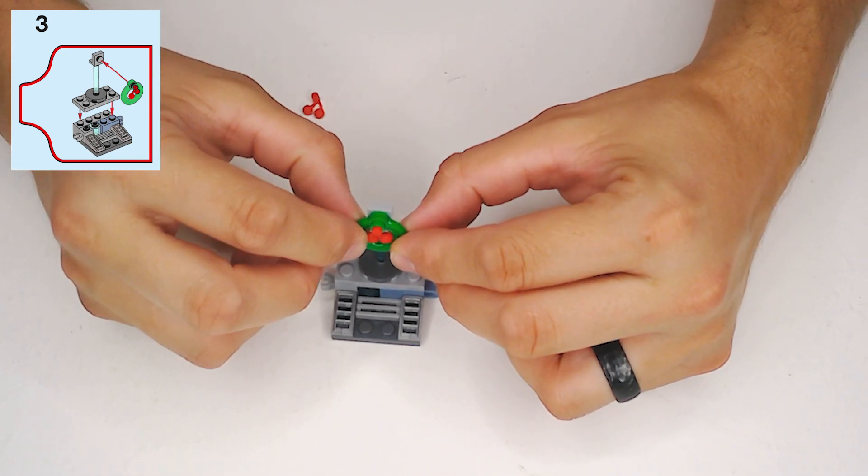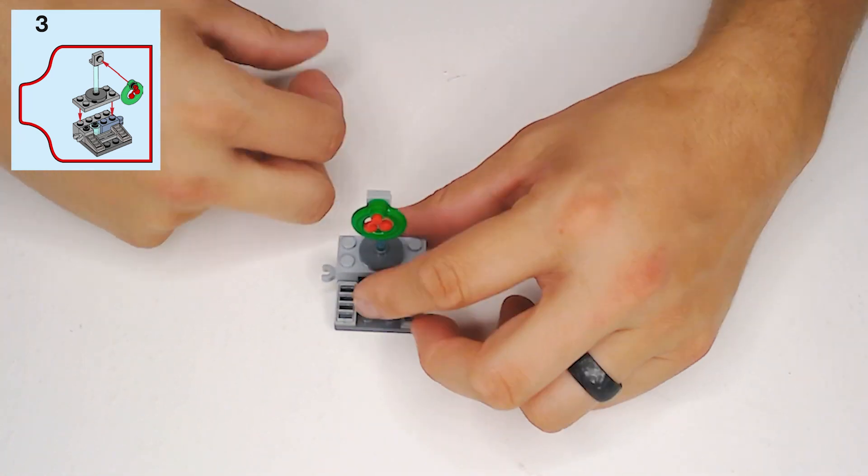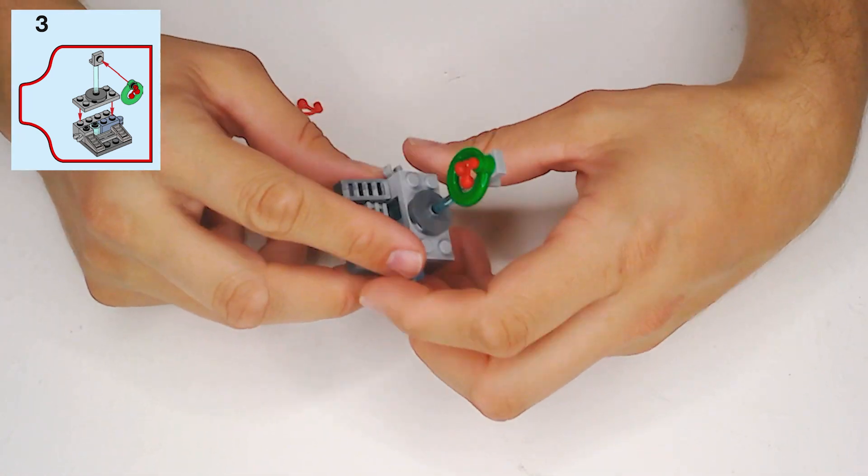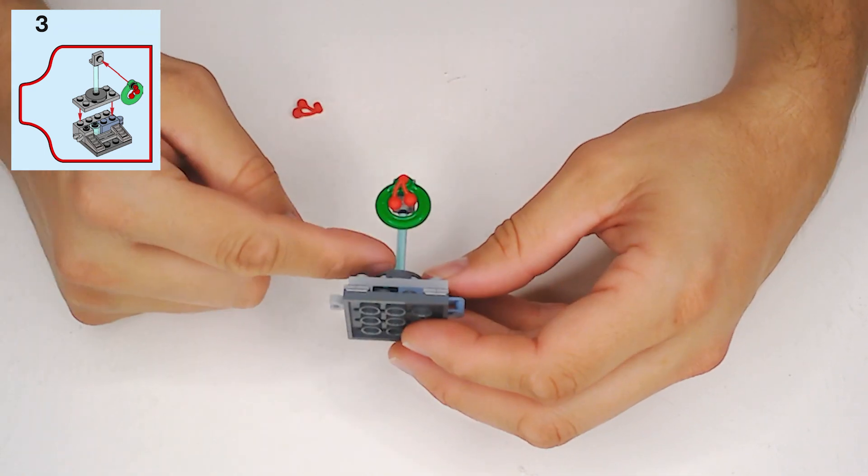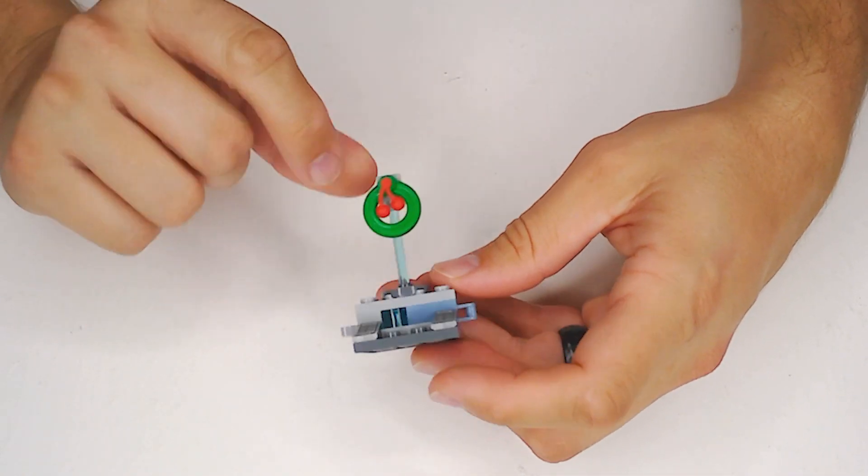And then clip it onto the stud. Like that. And we have a wreath. And this is probably going to be some sort of weapons rack or something like that. It's just like beams, energy beams holding up our wreath.